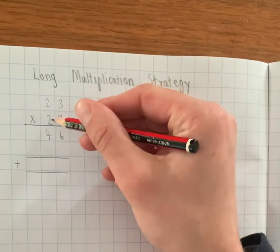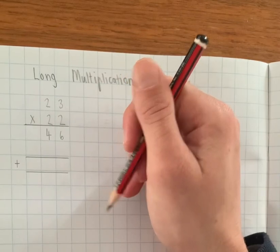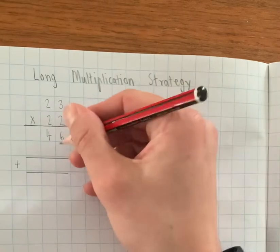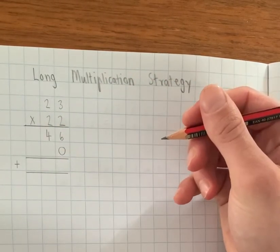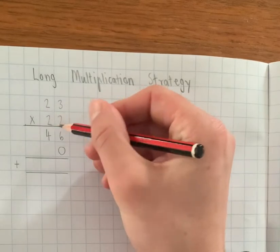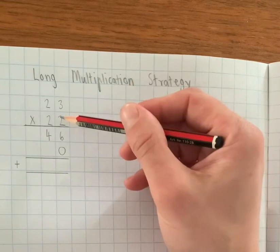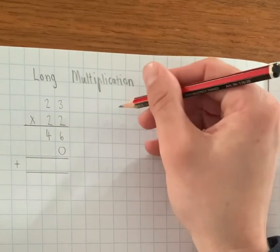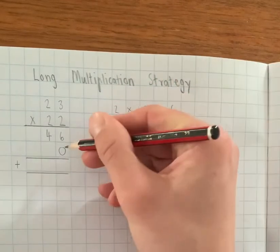Now what we're going to do is we're going to do 20 times 3 and 20 times 20. Now what has to happen here is we need to put a zero here to hold the place, and that is because this is really 20 times 3, and as you know, 20 times 3 is 60.